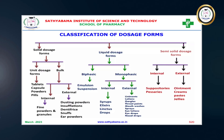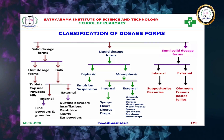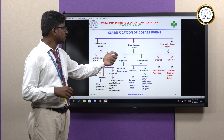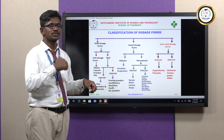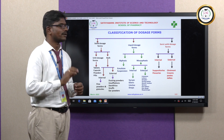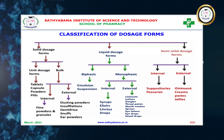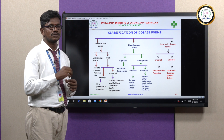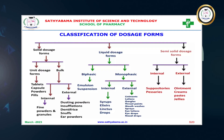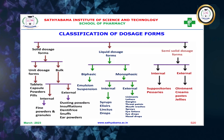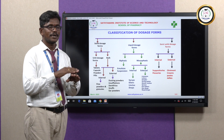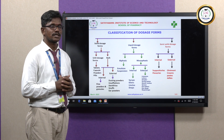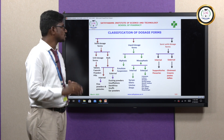The third type is the semi-solid dosage form, again divided into two types. Internally administered means not through the oral route — they are administered into body cavities. Suppositories are administered into the rectal cavity; pessaries are administered into the vaginal cavity. Externally administered semi-solid dosage forms include ointments, creams, paste, and jellies.